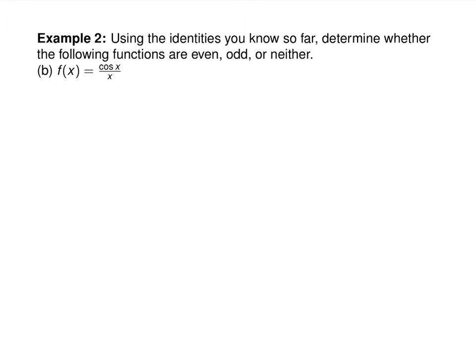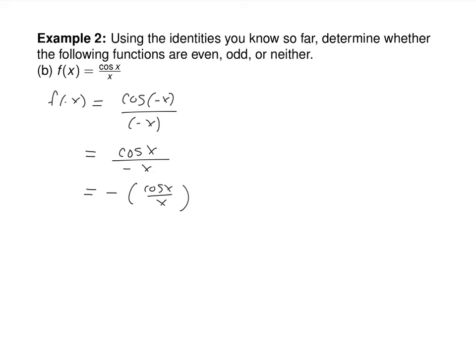How about the function cosine(−x) / x? Plugging in negative x gives cosine(−x) / (−x). Cosine(−x) is just cosine x because cosine is even. Then you have cosine x divided by −x. That's obviously not the original function, but it is the same as negative the original function, so that's −f(x). Therefore this function is also odd. What if the denominator had been x²? Then you'd have a positive in the bottom, which would make the function even.